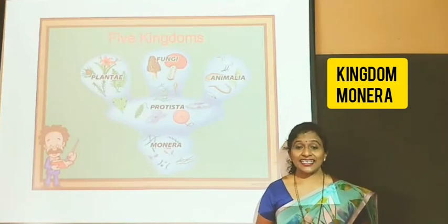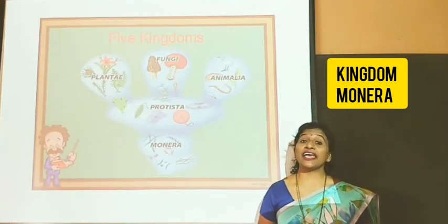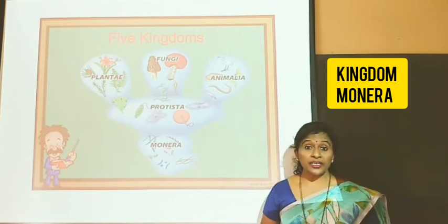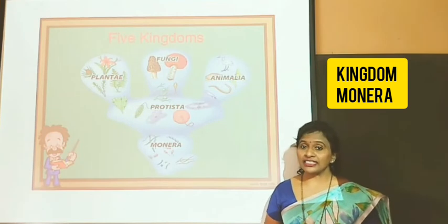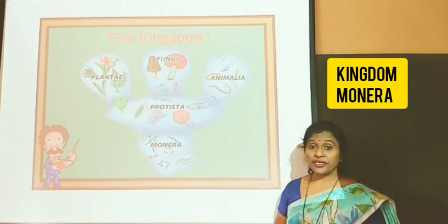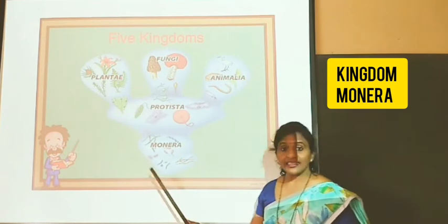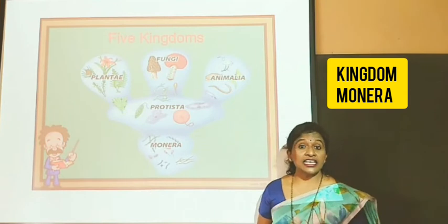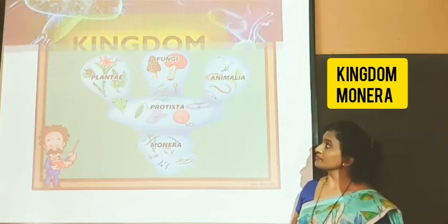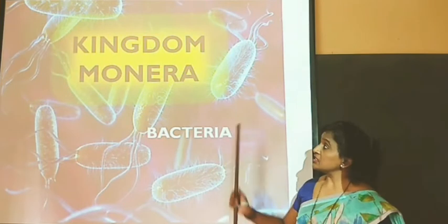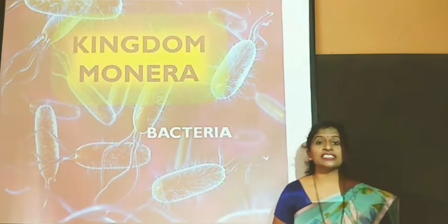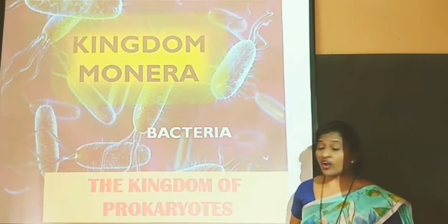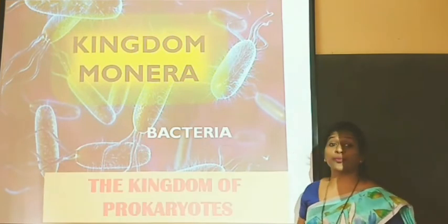Hello students. In the last video we had seen what were the various criteria to explain the five kingdom classification. So today we will take only one kingdom and try to learn the various salient features. So Kingdom Monera — the sole members of this kingdom are bacteria. They are also called as the kingdom of Prokaryotes.